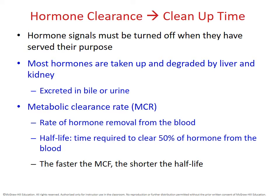When discussing hormone clearance, you'll encounter the terms metabolic clearance rate (MCR) and half-life. The metabolic clearance rate is how fast you remove a hormone from the blood. Half-life is how long it takes to get down to 50% of the original hormone amount. The faster the metabolic clearance rate, the shorter the half-life — you clear it quickly so it doesn't take long to reach 50%. The slower the metabolic clearance rate, the longer the half-life.